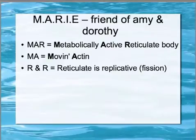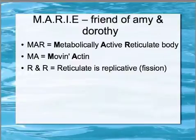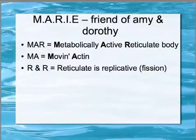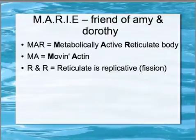Marie is another girl's name, and she belongs with Amy — she's a friend of Amy. M-A-R says to me: metabolically active reticulate body. The A also helps me remember actin reorganization, which allows uptake of the organism via endocytosis. The R part helps me remember that the reticulate body replicates via binary fission.